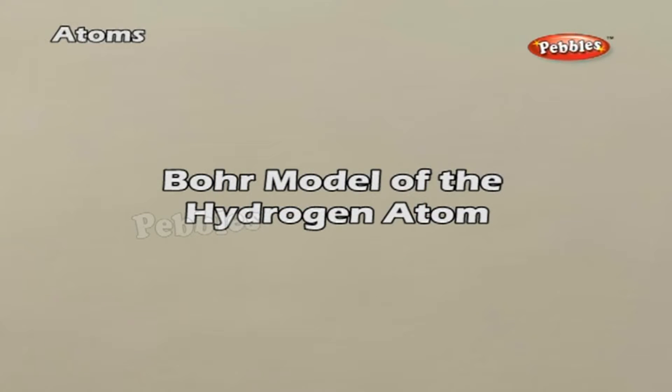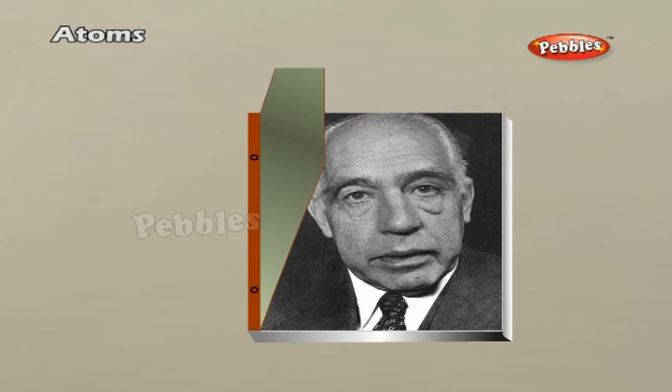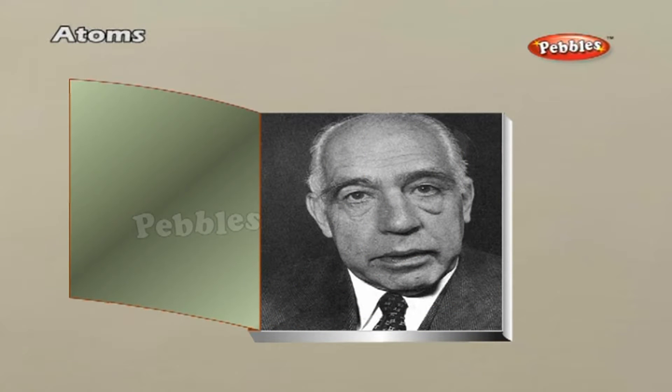Bohr model of the hydrogen atom: At the beginning of the 20th century, there was a great deal of confusion as to why classical physics had not been able to explain or account for the observed characteristic atomic spectra.